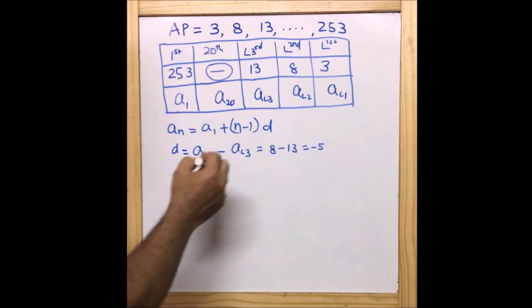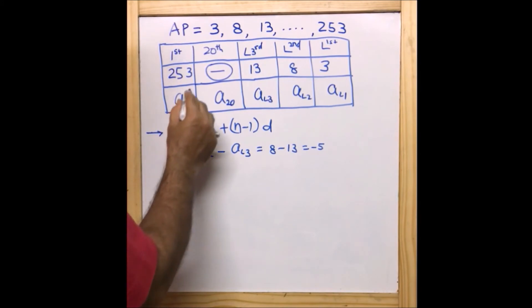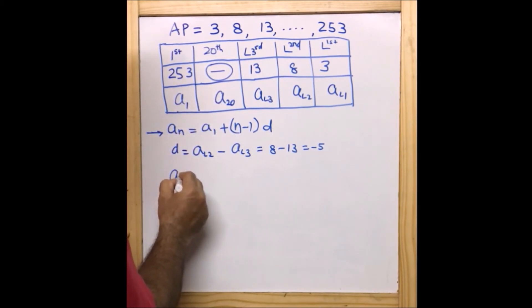Now let us replace the things we have in this particular equation. After replacing, a_n is a_20, so I can write a_20 = a_1, which is 253.